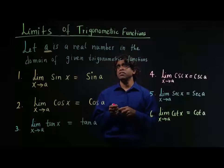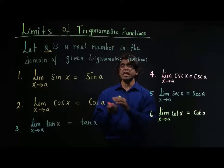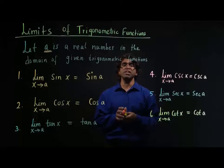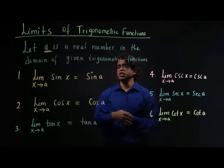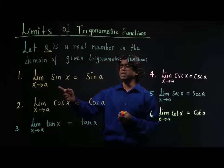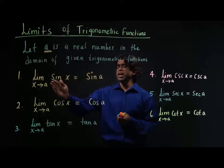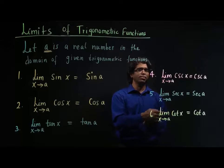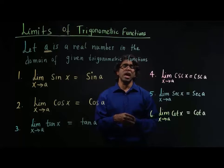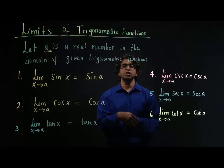As you can see, if the point is a real number and the point is in the domain of the given trigonometric function, we can find the limit of that trigonometric function. The way we find the limit is basically by substituting that real number into the trigonometric function. So for example, if I want to find the limit of the sine function at point a, I will substitute a for x. In the same way, I will substitute a for x in all the trigonometric functions to find the limit at any real point in the given domain.